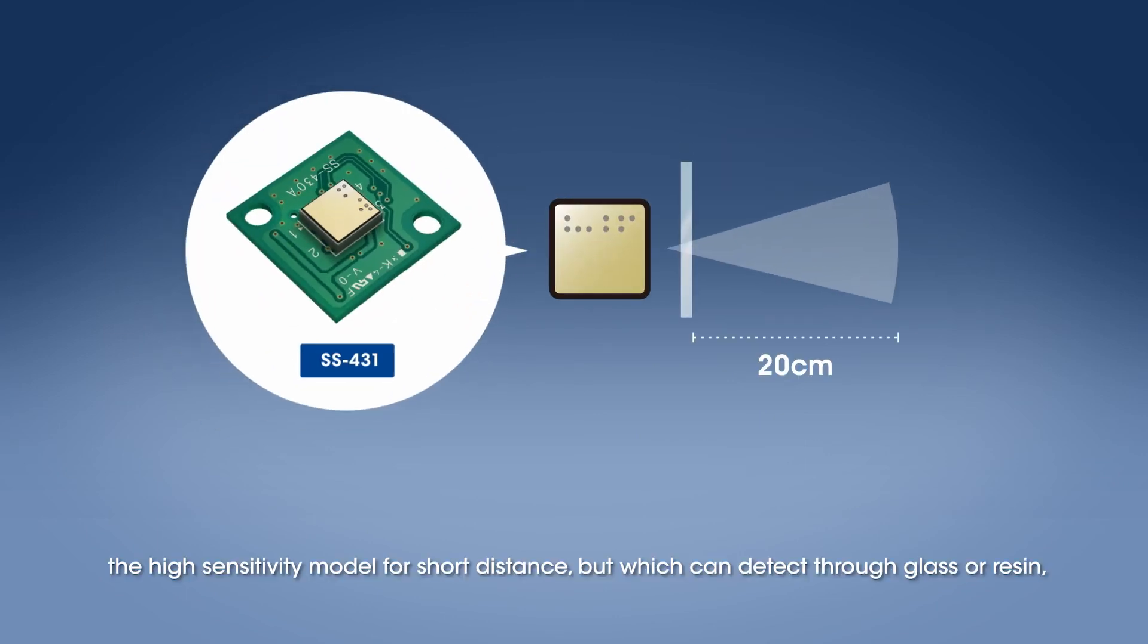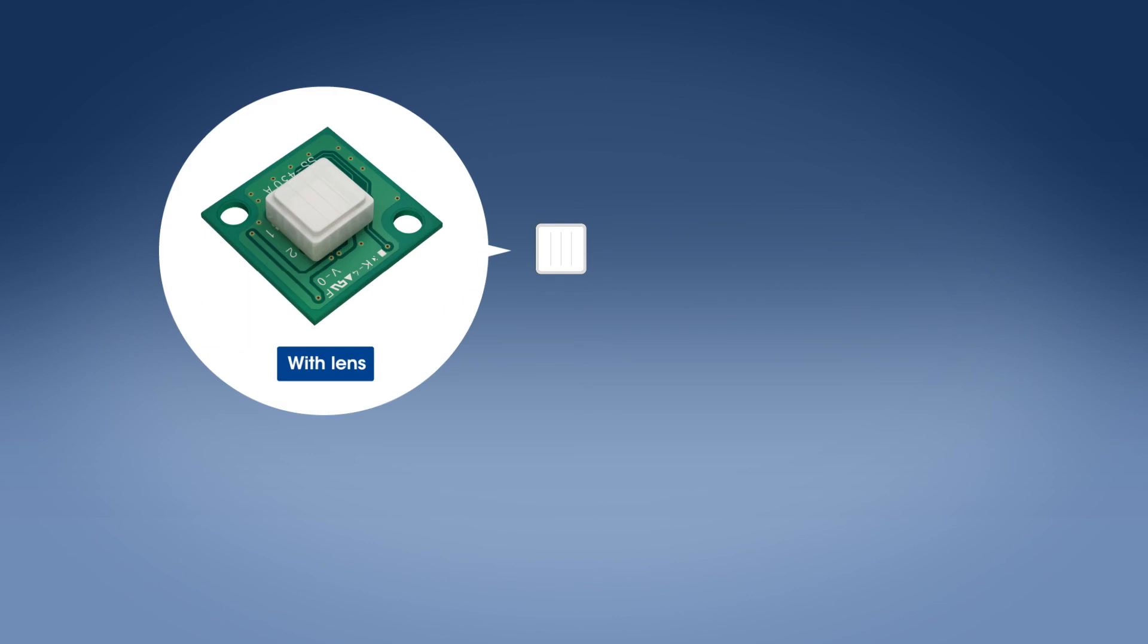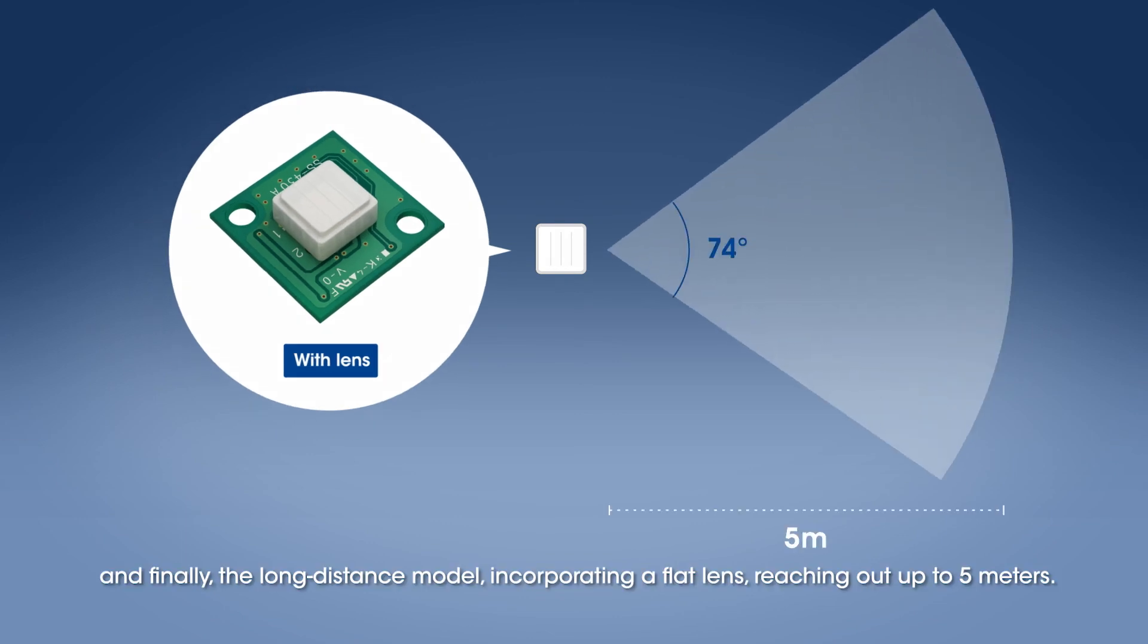The high sensitivity model for short distance, but which can detect through glass or resin. And finally, the long distance model incorporating a flat lens reaching out up to 5 meters.